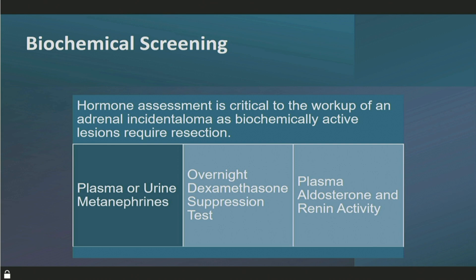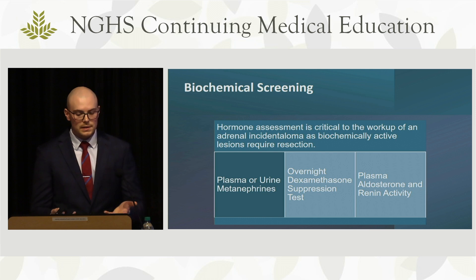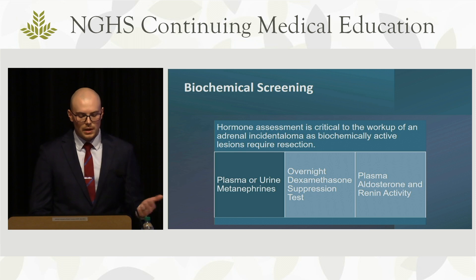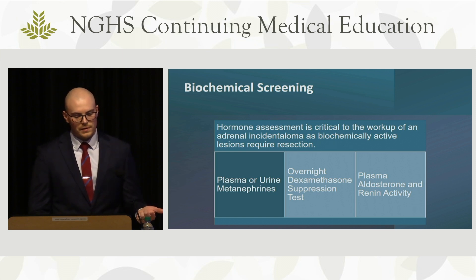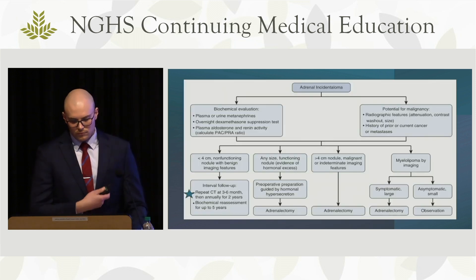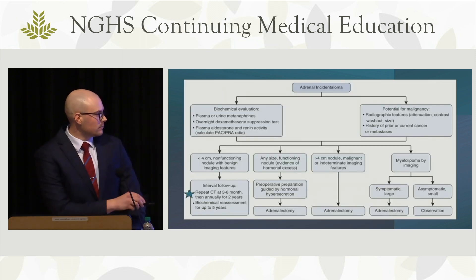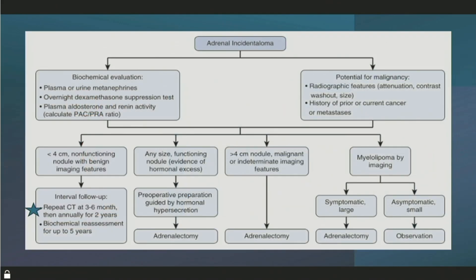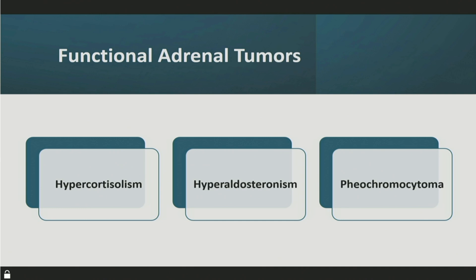Hormone assessment is critical for workup of adrenal lesions. Biochemically active lesions automatically mandate resection. The three key tests are: plasma metanephrines, dexamethasone suppression test, and aldosterone-renin activity level. Any size lesion with functioning tumor indication goes to adrenalectomy after appropriate pre-op preparation. The three functioning adrenal tumors we'll cover are hypercortisolism, hyperaldosteronism, and pheochromocytoma.